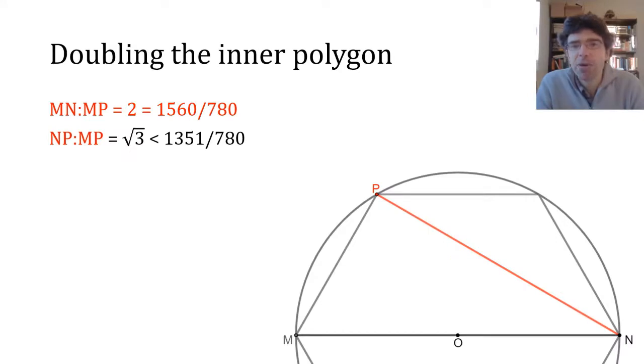Similarly with the inscribed polygons, we start with MP being one side of that inscribed hexagon and we're going to focus now on the diameter MN instead of the radius MO. So MPN is again half of an equilateral triangle, so MN to MP is 2, NP to MP is root 3, and this time we're going to use that being just below 1351 to 780.